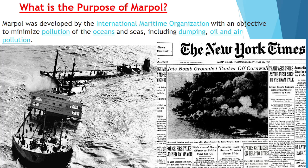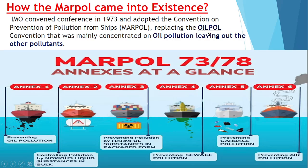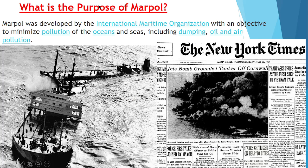So let's start today's video. What is the purpose of MARPOL? Basically, why did MARPOL come? MARPOL came because of the Torrey Canyon incident. When the Torrey Canyon incident happened, there was a need for a MARPOL. Before that, there was one regulation called the Oil Pollution Convention. The purpose of MARPOL is that it was developed by the IMO and the basic aim behind it was to minimize the pollution of the ocean and sea.